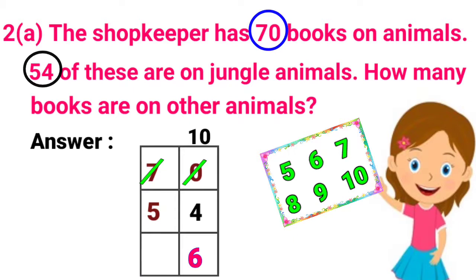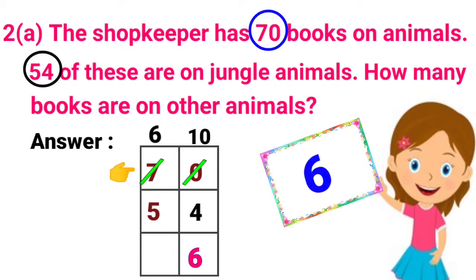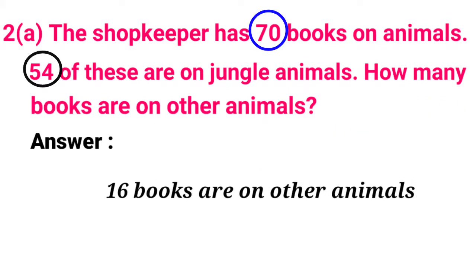Then move to the 10's place. Since we took 1 from 7, it will become 6. So 6 minus 5: 5 after 6, so the answer is 1. We get the answer 16 — 16 books are on other animals.